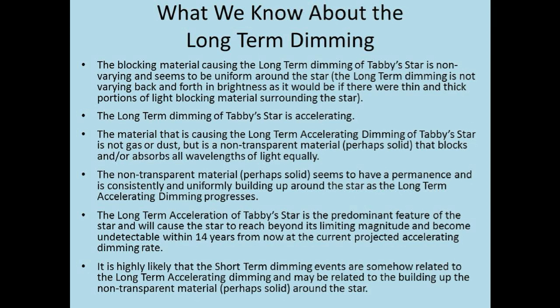From everything we have concluded on this channel, we can make the following statements about the long-term accelerating dimming of Tabby's Star: The blocking material is non-varying and seems to be uniform around the star. The long-term dimming is not varying back and forth in brightness as it would if there were thick and thin portions of light blocking material. The long-term dimming is accelerating. The material causing this is not gas or dust, but is a non-transparent material — perhaps solid — that blocks and absorbs all wavelengths of light equally.